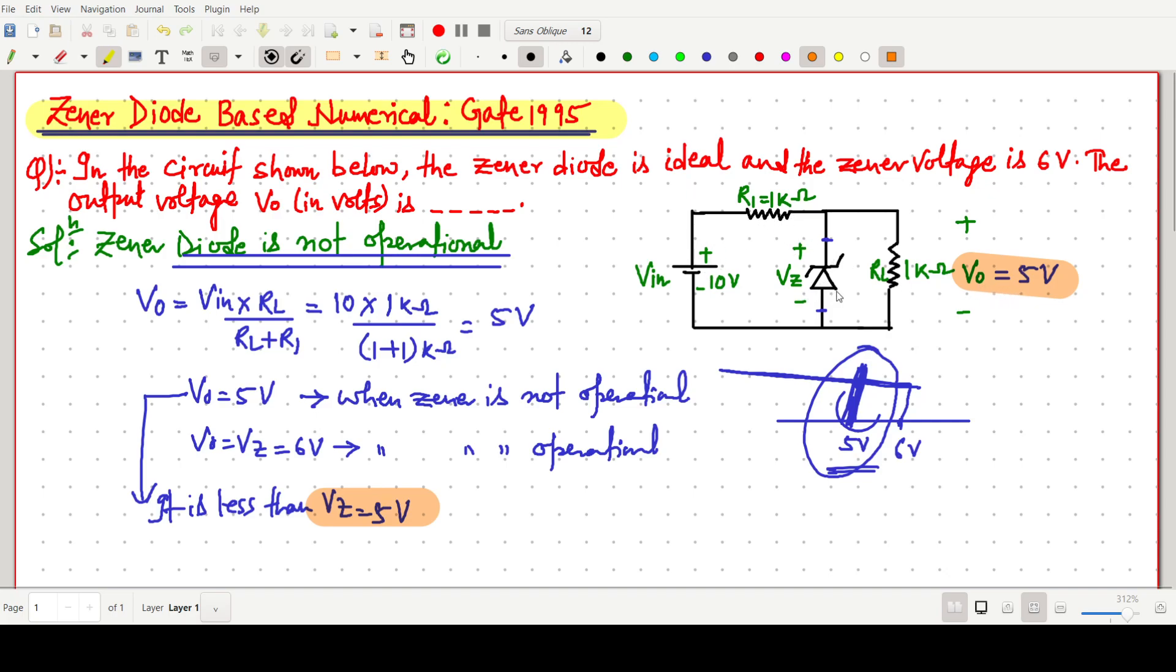because these two resistances with the diode, the diode is off, then applying Kirchhoff's voltage law, or simple, we can say the voltage divider, this voltage will be 5V. So the output voltage will always be 5V. So this is a very interesting question. We can say this value will be 5V.